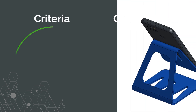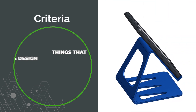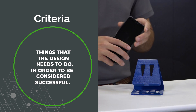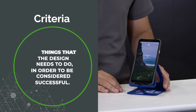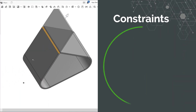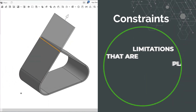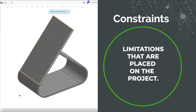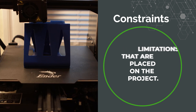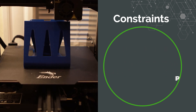During the identifying and research phase, we come up with a list of criteria and constraints. Criteria are things that the design needs to do in order to be considered successful. For example, a criteria for a phone stand is it must support the weight of a standard phone. Constraints, on the other hand, are limitations placed on the project. An example of a constraint would be the one week I gave my co-workers to complete their design.